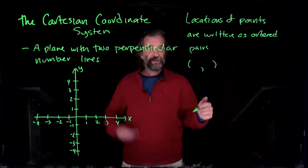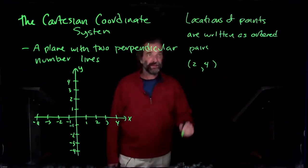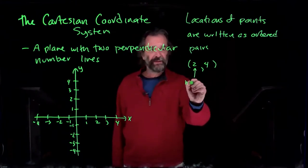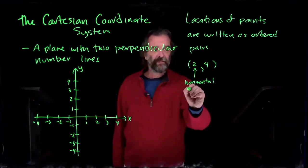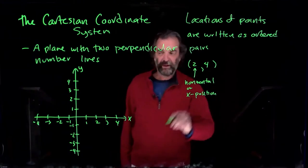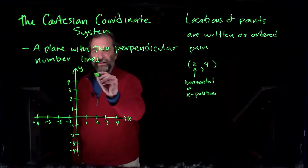The first element of the ordered pair is the horizontal or x-position. That says the point we're thinking about lies above two on the x-axis.